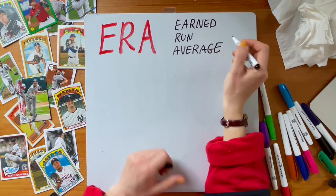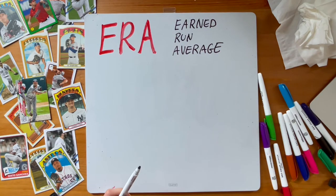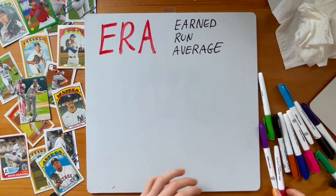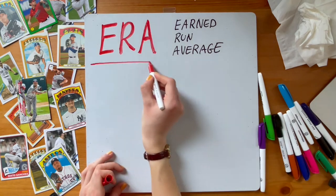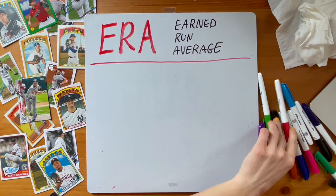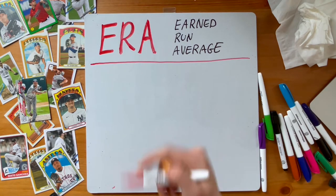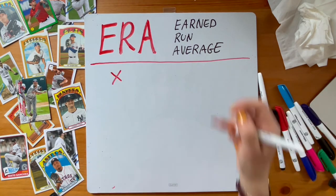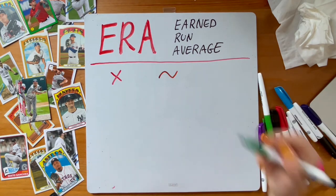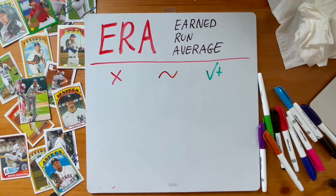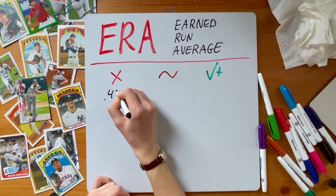Here's a scale. Poor: 4.30 and above. Average: 3.75. And excellent would be 2.50.